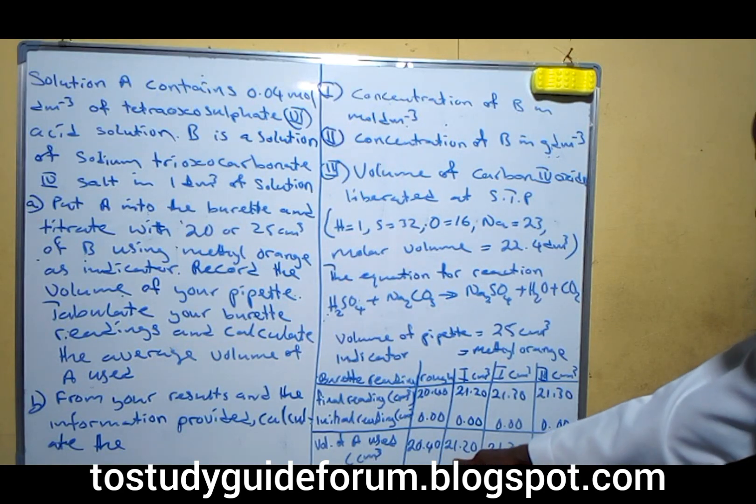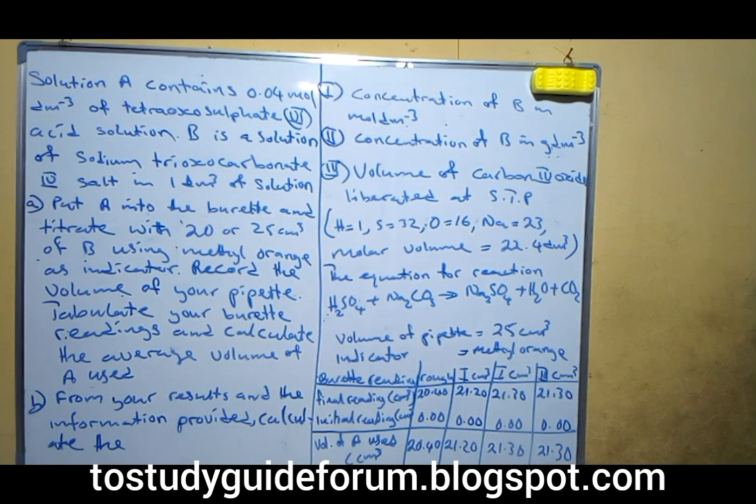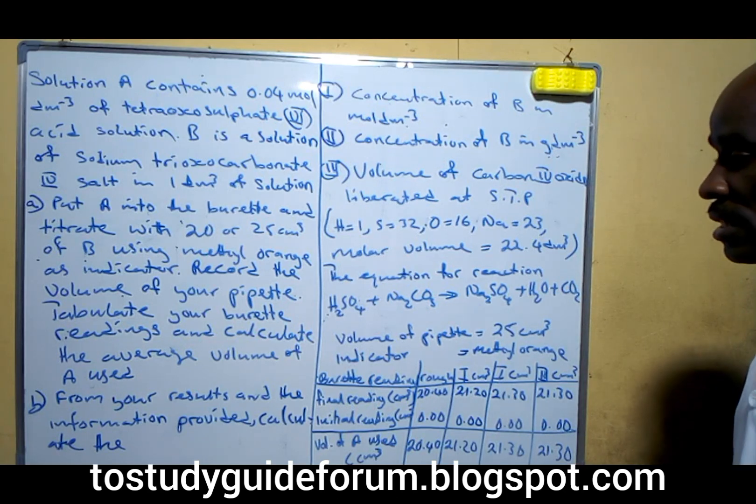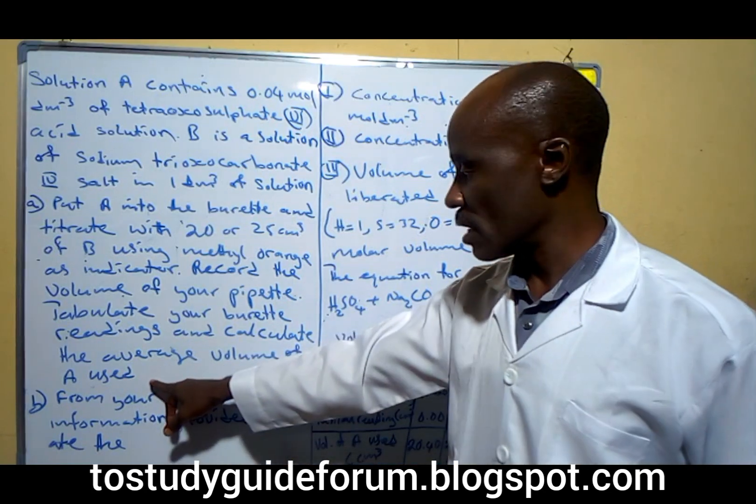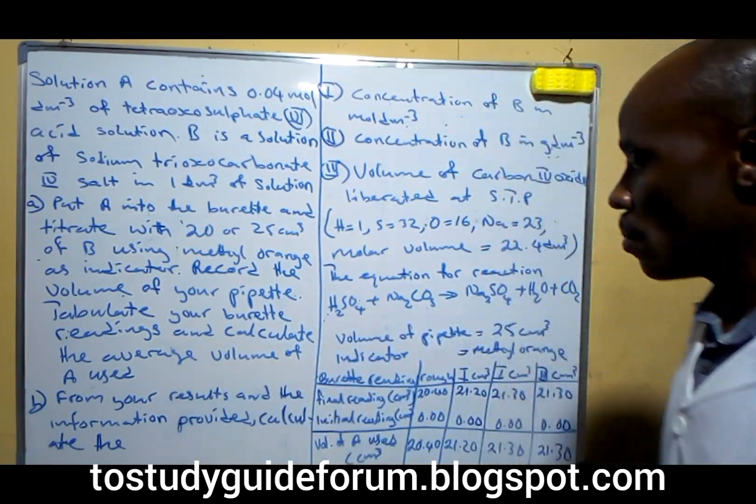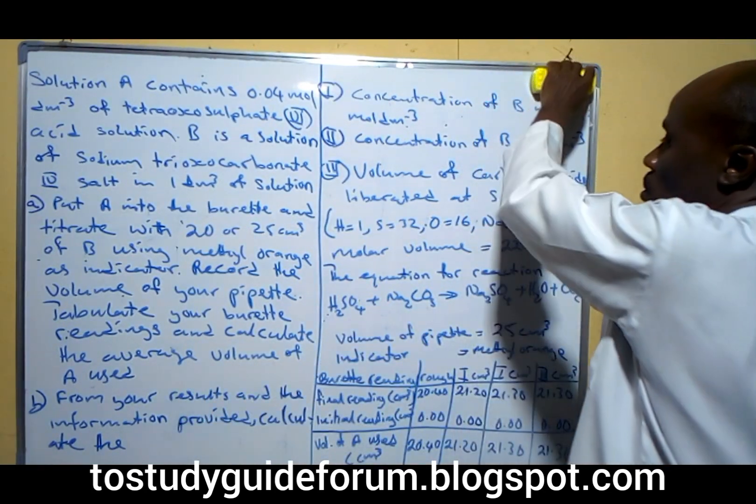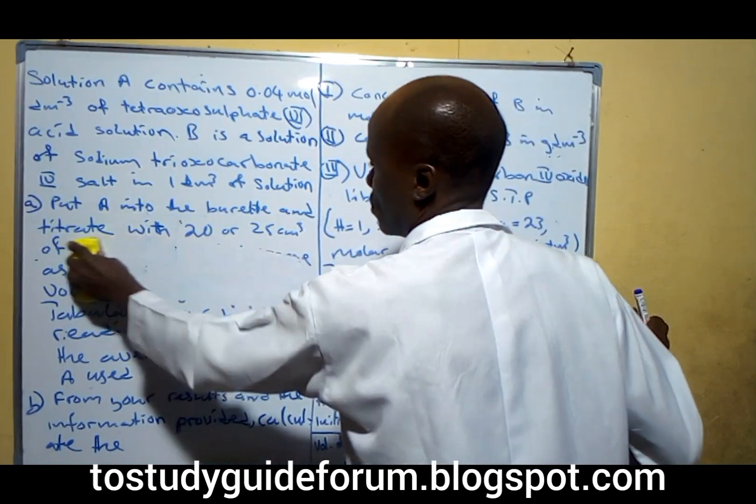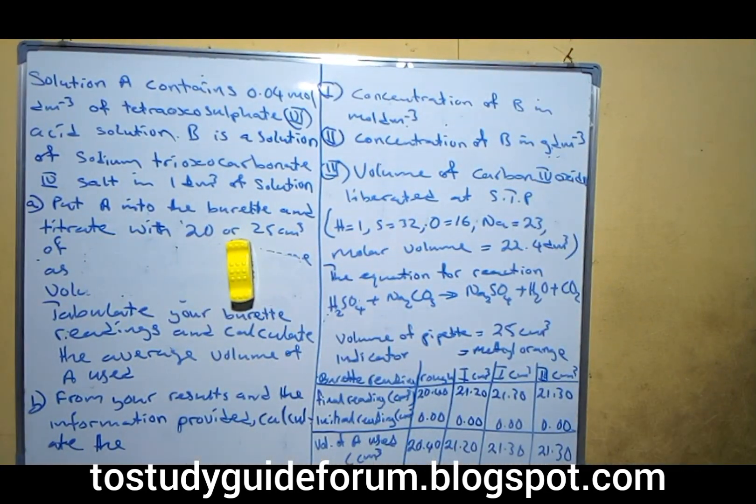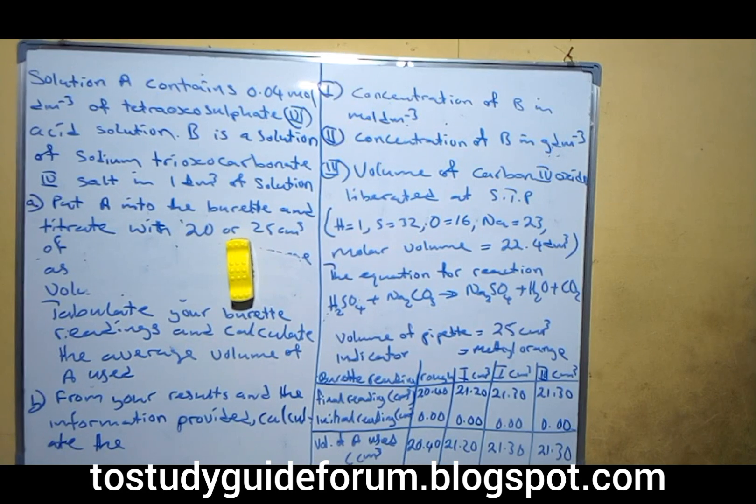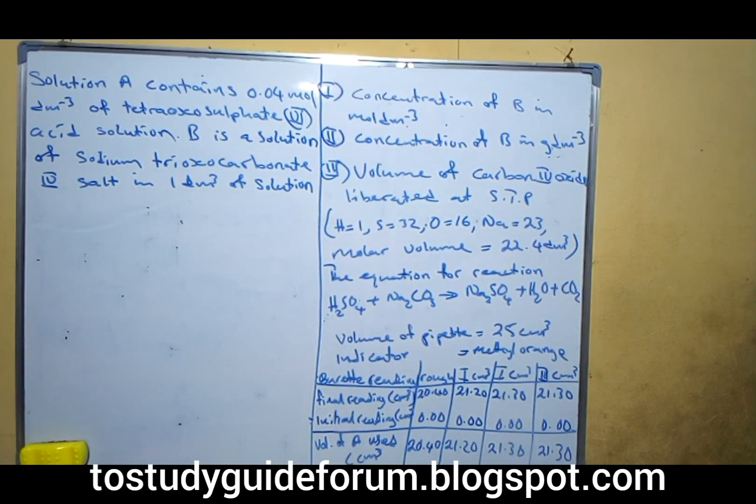Because of the difference between them, we can make do with all of them, but I prefer using the two that are very close to each other. Let's see how we can calculate the average volume. The average volume of A used.